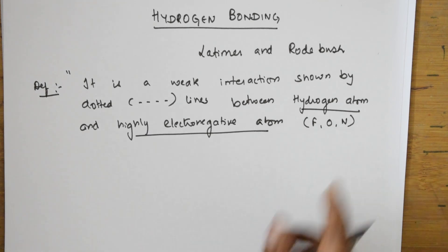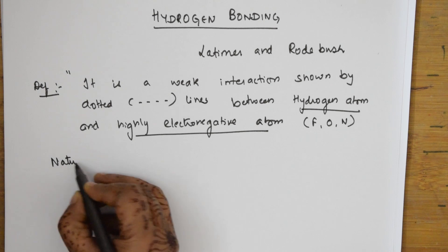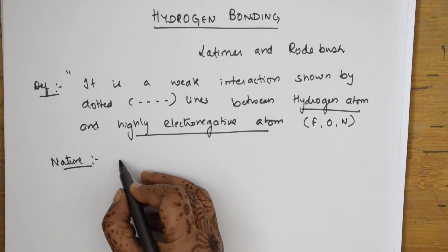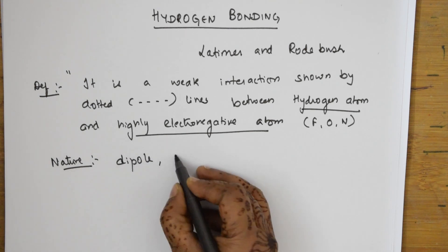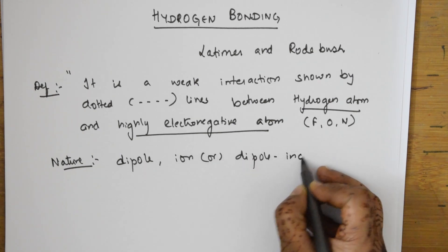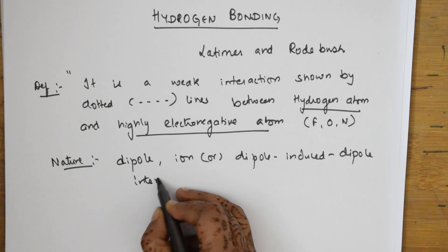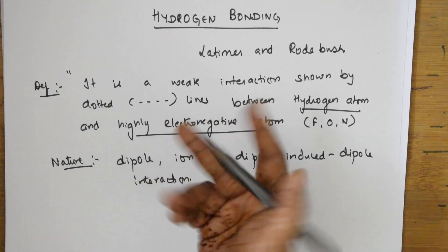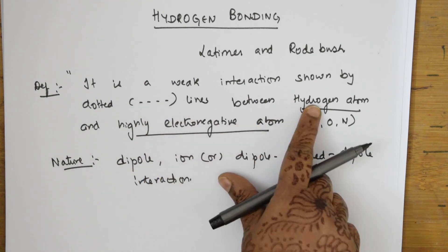The electronegative atom examples are fluorine, oxygen, and nitrogen — atoms that are very small in size. The nature of hydrogen bonding is that it is formed by dipole-dipole interaction. We have different types: dipole-dipole, ion-dipole, and induced dipole. So the nature of hydrogen bonding is formed by dipole or ion-dipole interaction. It is a weak attraction denoted by a dotted line.